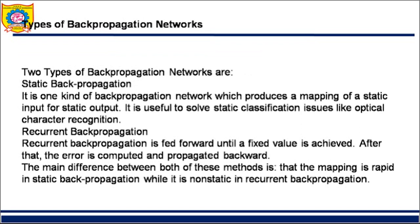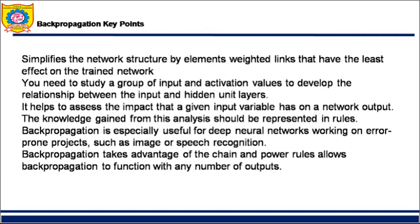Backpropagation exists in two types. One is static backpropagation and the other is dynamic recurrent backpropagation. Static backpropagation is generally used for static classification problems — for example, optical character recognition (OCR) problems — where the mapping between input and output is static. Recurrent backpropagation involves feeding forward and then propagating the error back. Static mapping is rapid in the first type. The second type works with non-static data. If data is static, use the first; if data is non-static, use the second. Generally the second one is preferred as it works on more complicated problems.